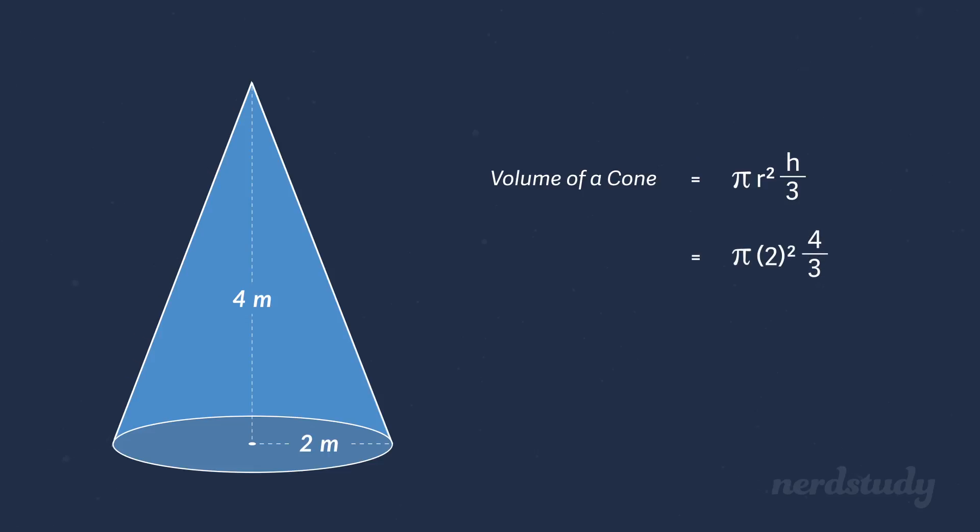Pi times 2 squared times 4 over 3, which if we calculate equals to roughly 16.755 meters cubed. Nice! Let's do another question together.